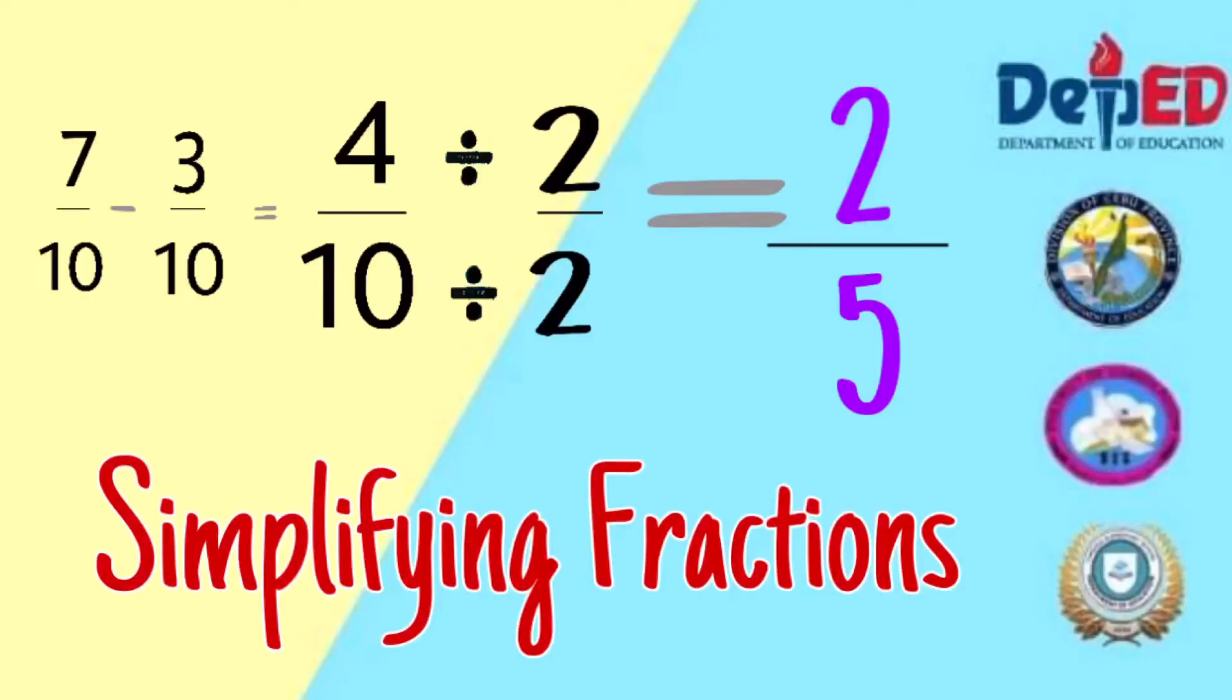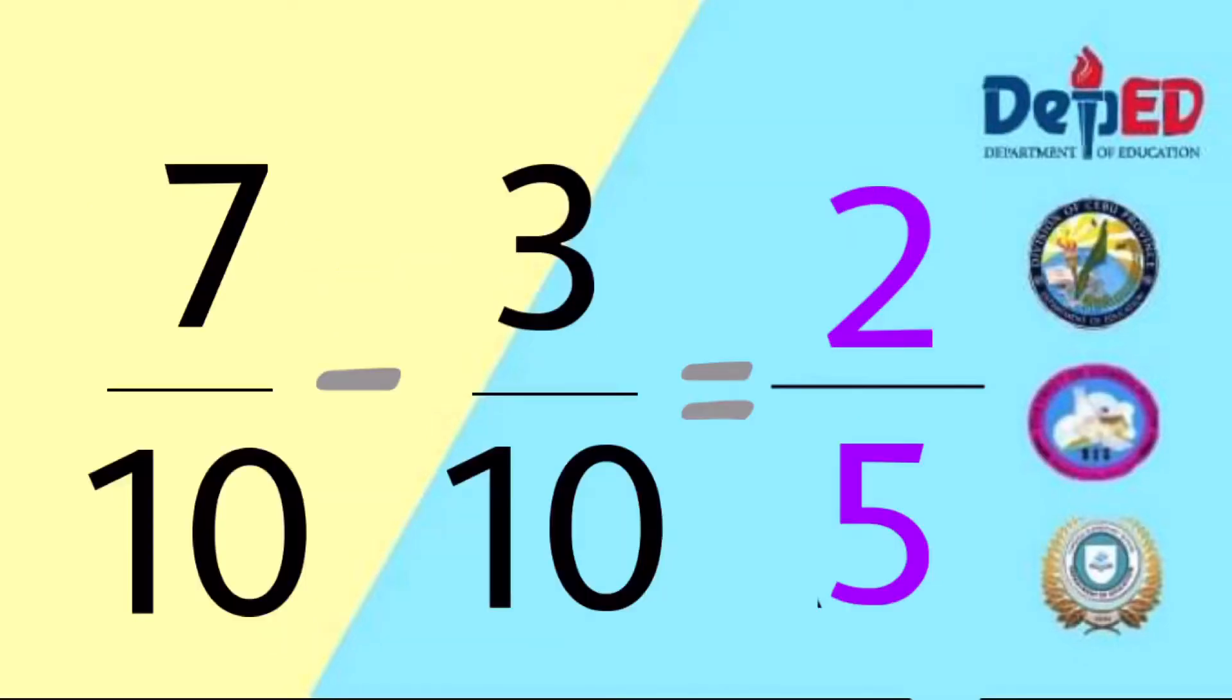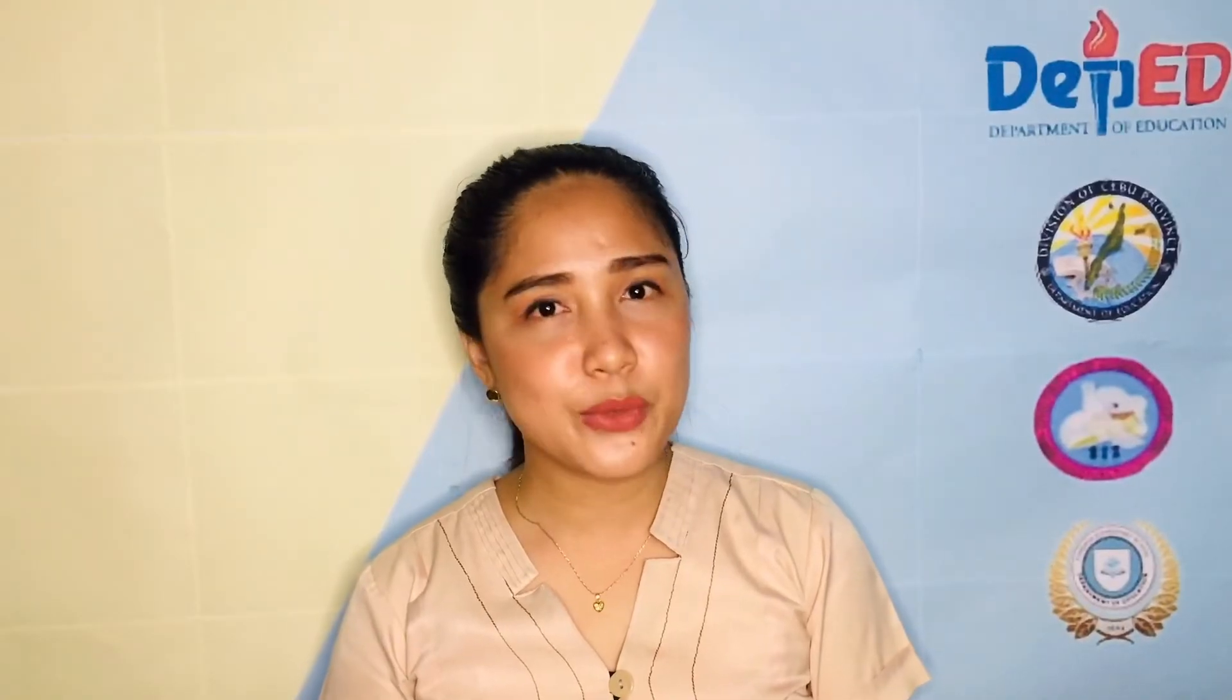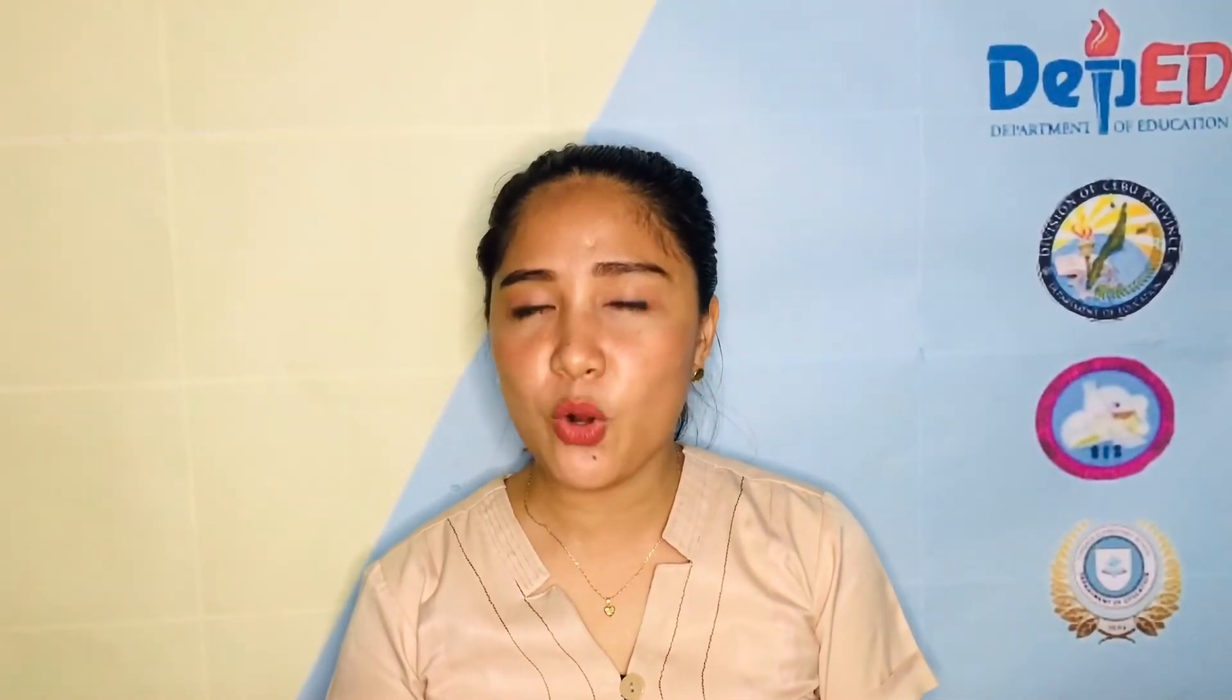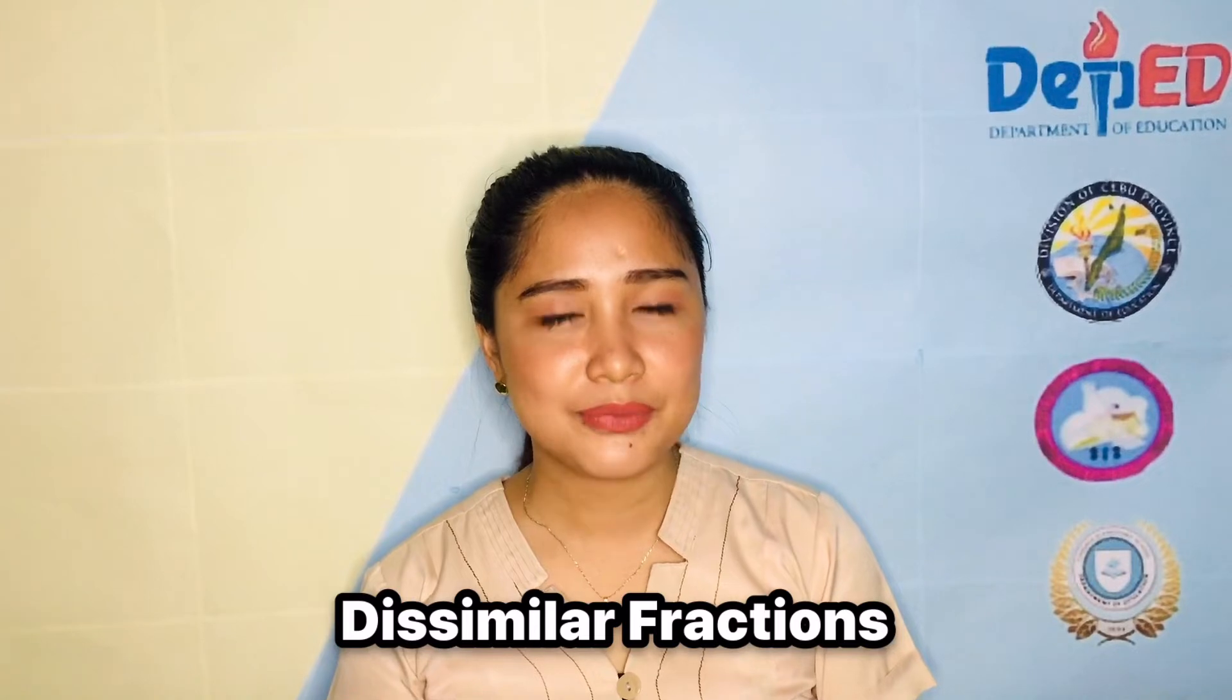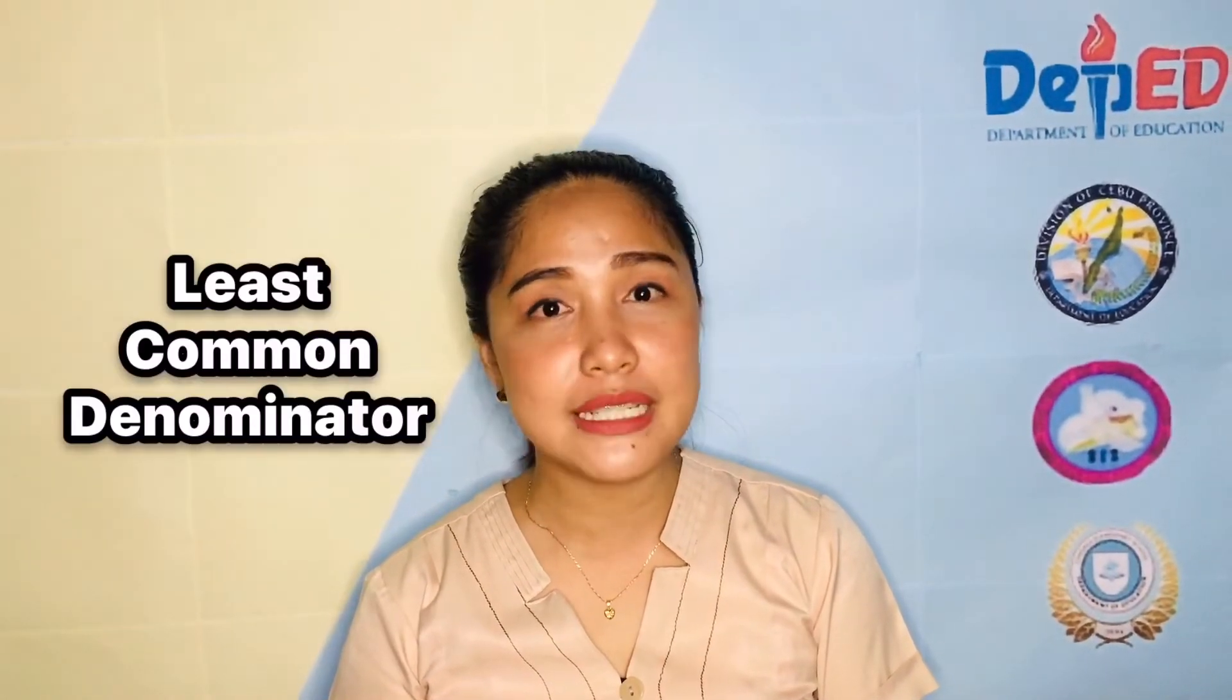4 divided by 2 equals 2. 10 divided by 2 equals 5. Therefore, 2 fifths is the simplified answer. In cases where the denominators are not the same or dissimilar fractions, let's take the least common denominator.